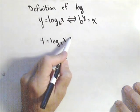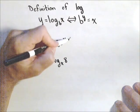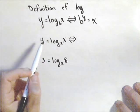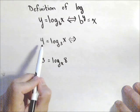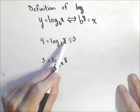So here's a couple of examples where rewriting it using this definition would be useful. One is if our unknown is the argument of log. So we have 4 equals log base 3 of x.